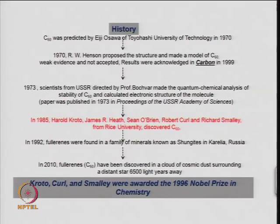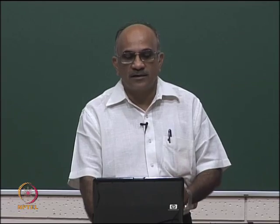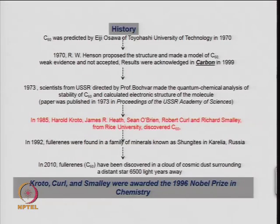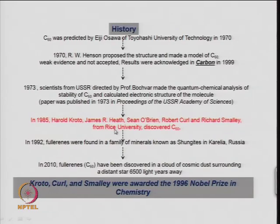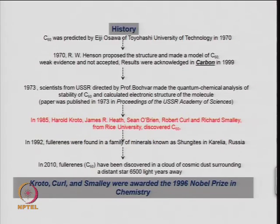This molecule was predicted theoretically and some experiments were done, but clinching evidence was not there. In 1985 a team of people from England and USA contributed to the actual discovery of C60. The main players in the discovery of C60 were Harold Kroto, Robert Curl, Richard Smalley, and James Heath who was a student at that time. These four people worked at Rice University, though Harold Kroto was visiting Rice University from the UK.